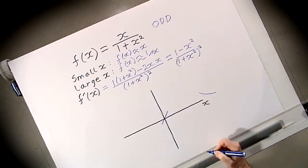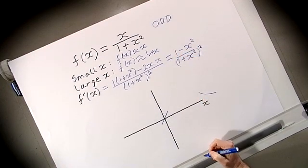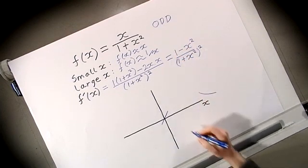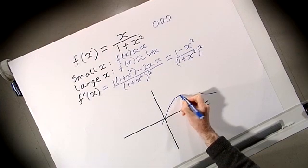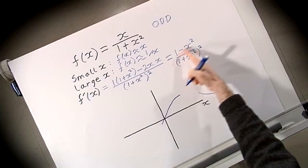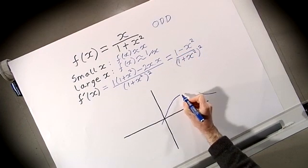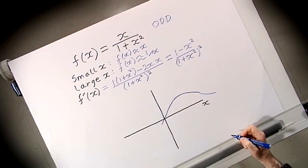This gives us information about the slope of the function. When x is small the slope is positive. When x equals 1 the slope is 0, so the function levels out to a flat point there. When x is greater than 1, f'(x) becomes negative and the function starts to decrease.